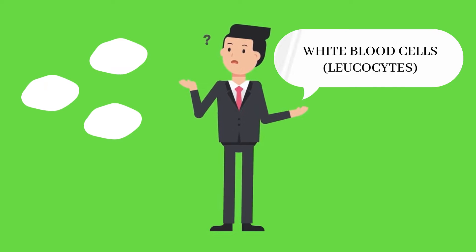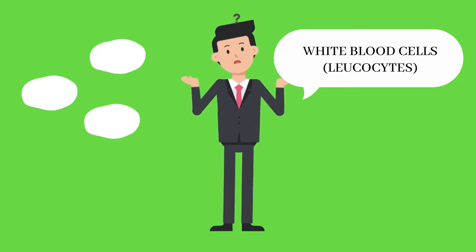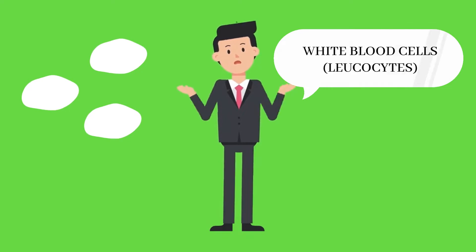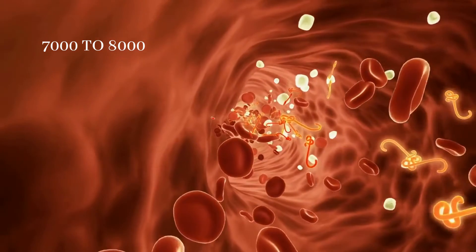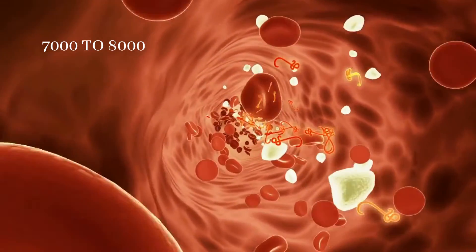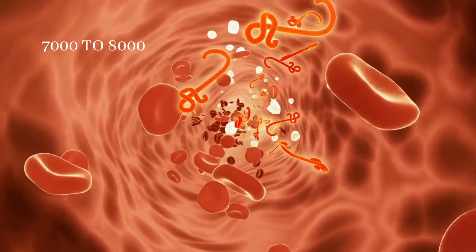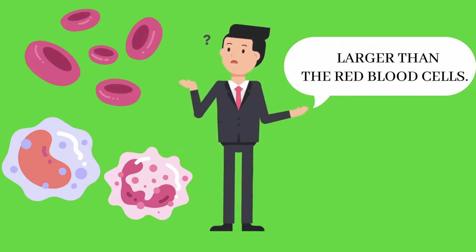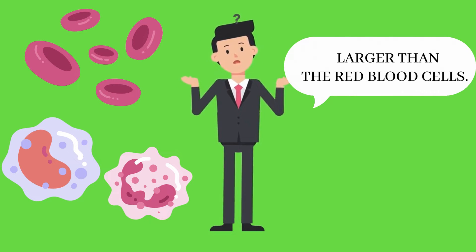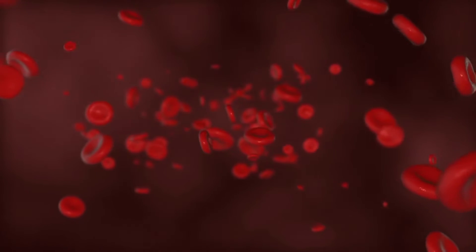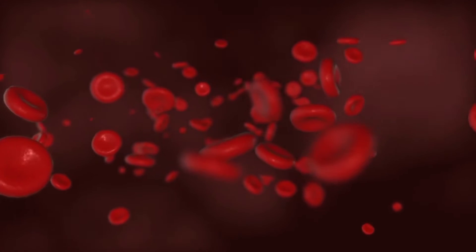White blood cells are also called leukocytes. These blood cells are colorless as they don't contain pigments. One cubic millimeter of blood contains 7000 to 8000 of them. They are much larger than the red blood cells.